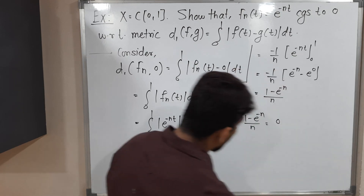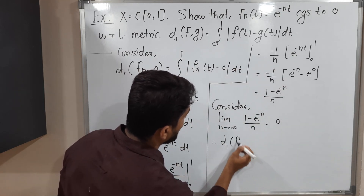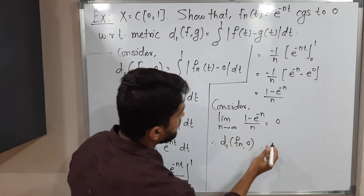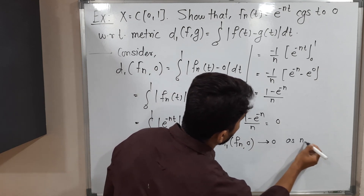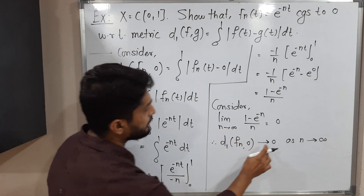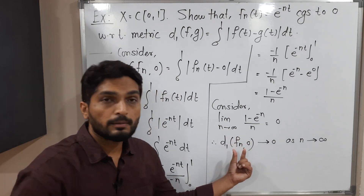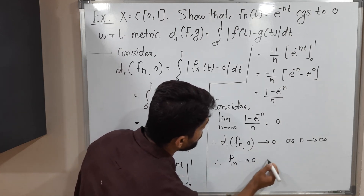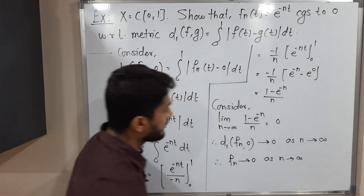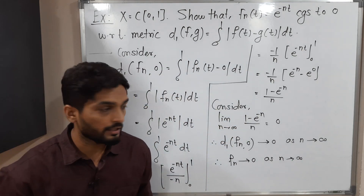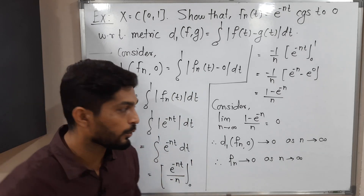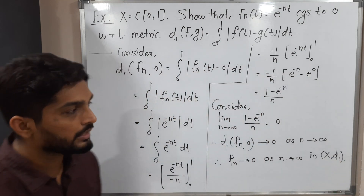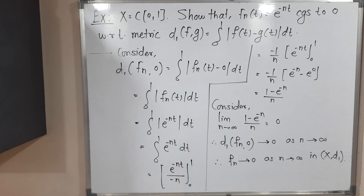The distance between fn and 0 goes to 0 as n tends to infinity. That means fn goes to 0 as n tends to infinity. So the sequence of functions fn converges to 0 in the metric space (X, d1). In this way, we completed this example. Thank you. See you.